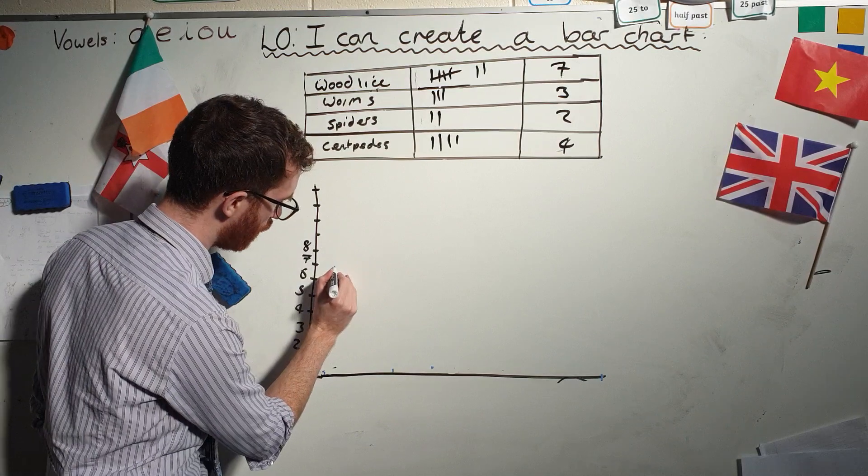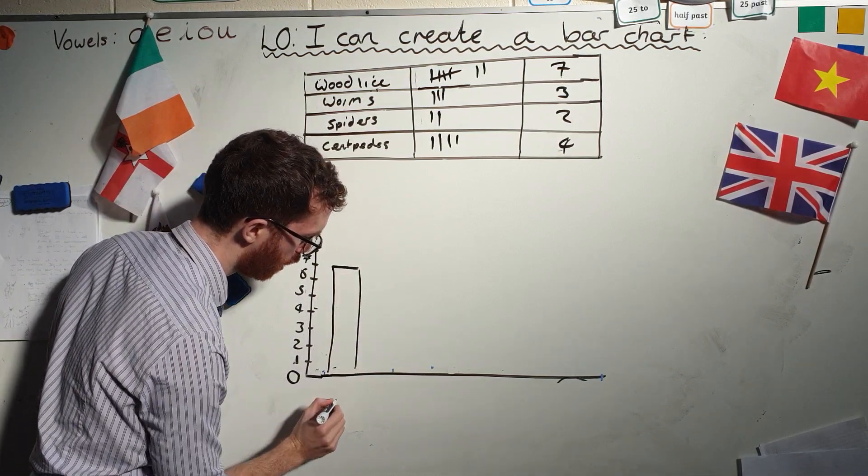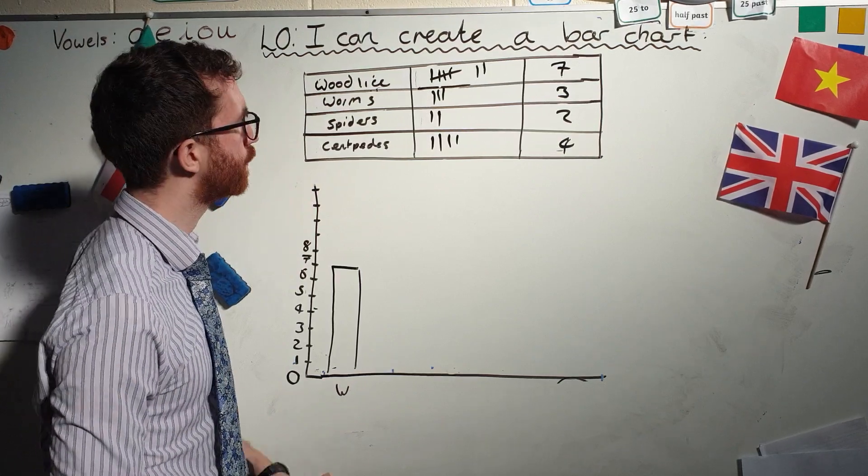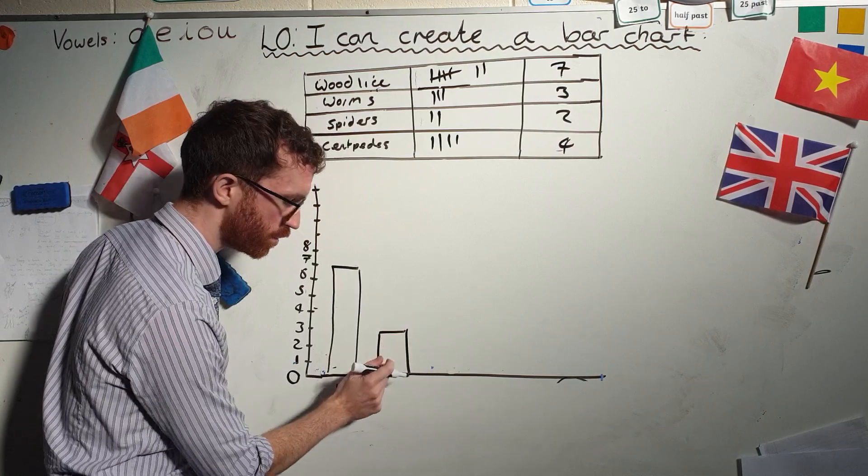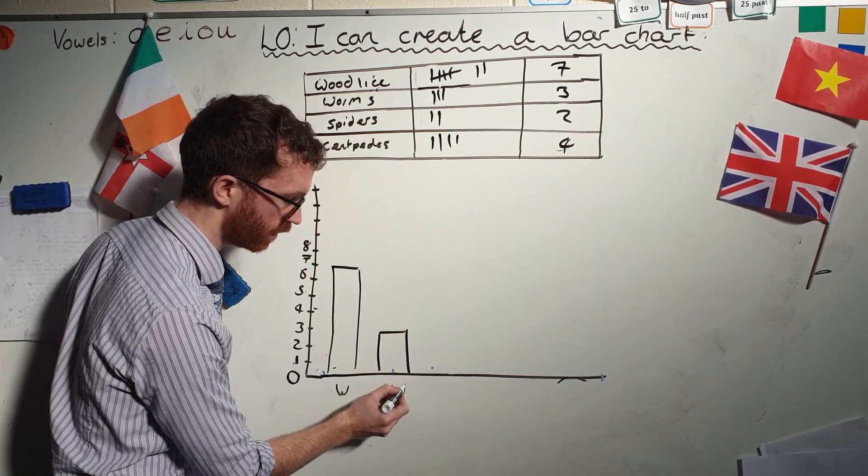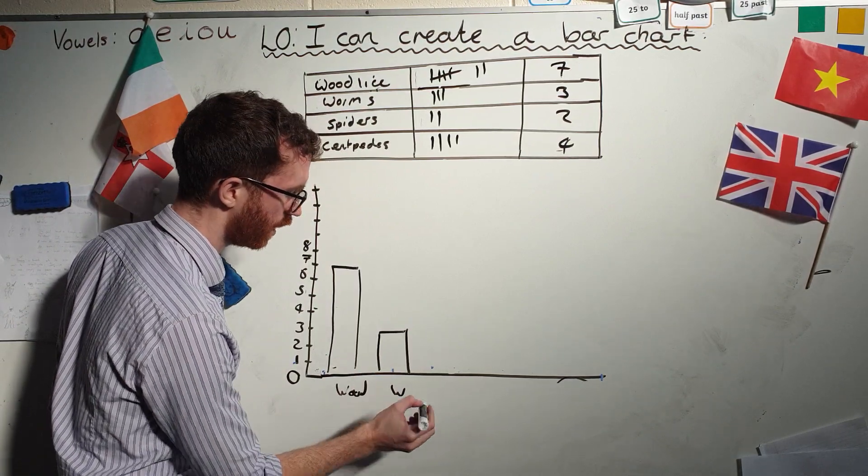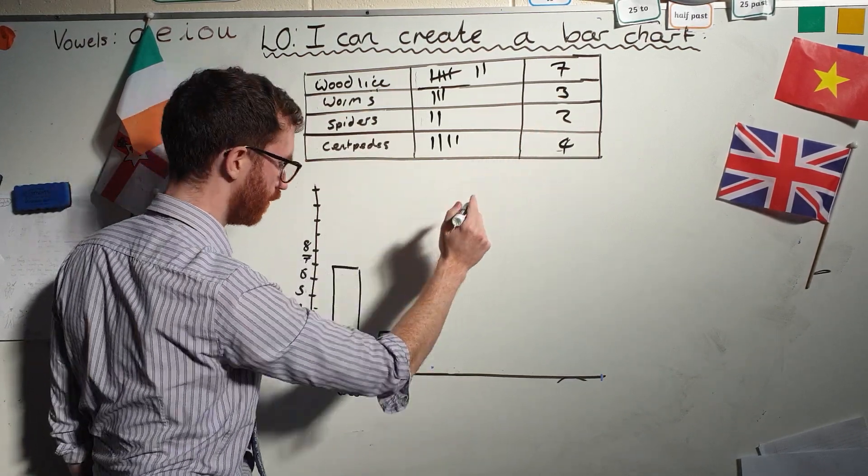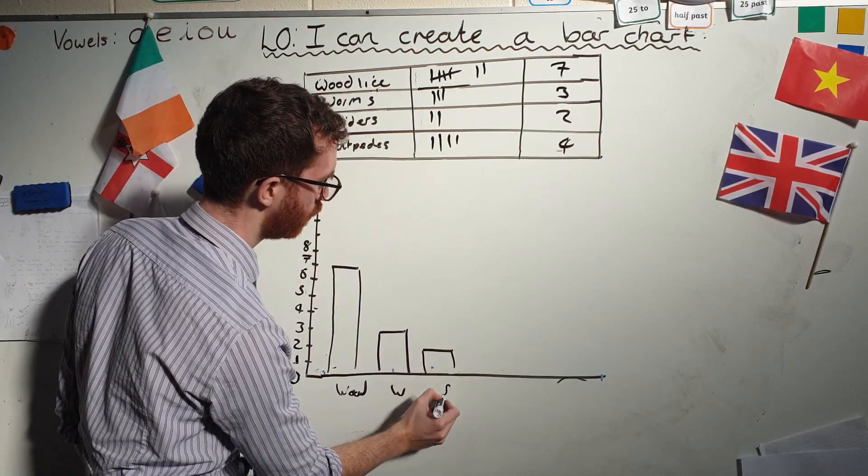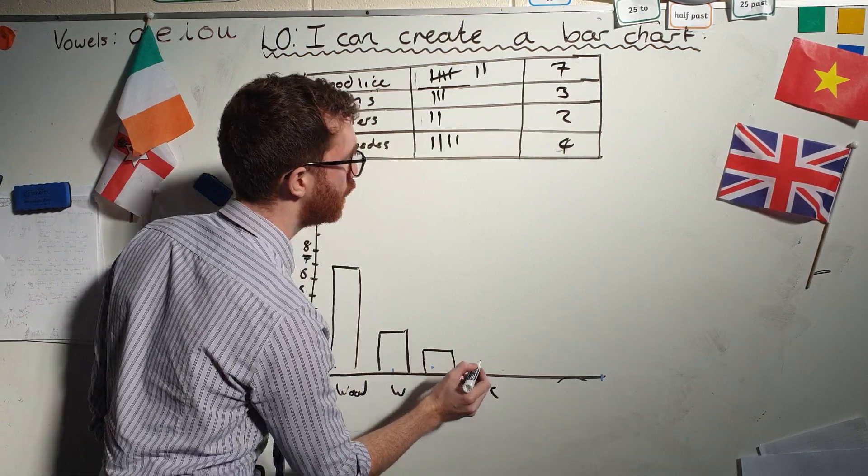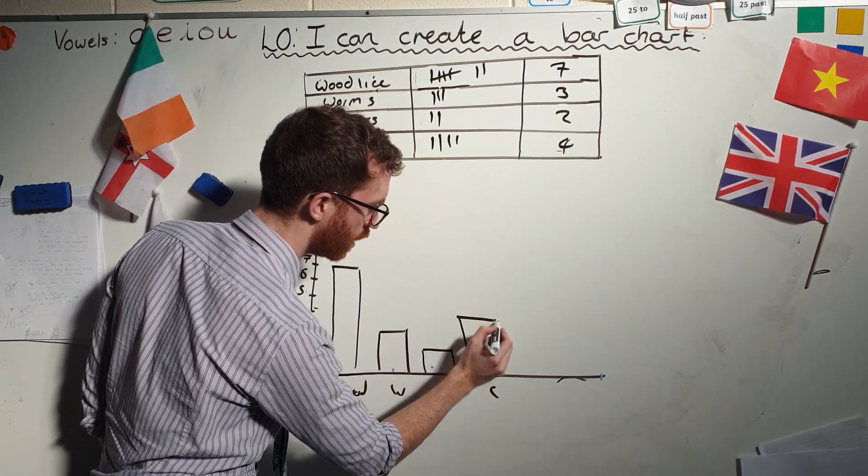So using a ruler, I must be using a ruler obviously for this if you do have one. Wood lice. Well, I go up to seven with a ruler and here is wood lice. Go to worms. Go along to three. Can you see how I've left a gap in between each bar chart? Really important to make it nice and clear. Go to spiders. I'm going to put wood for wood lice. Spiders. Here they are. How many spiders? Two. So I get a ruler going along to two. Brilliant. Spiders. And then centipedes, C, four. So I get a ruler going along to four. And there we go.